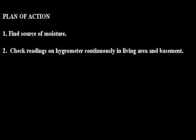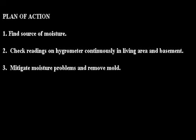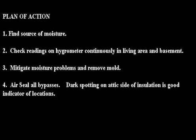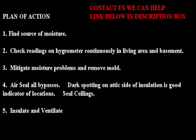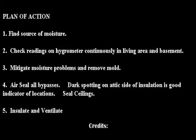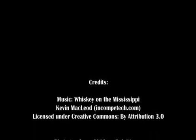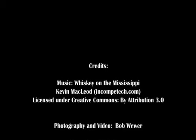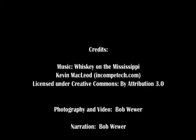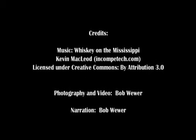Your plan of action: find the source of your moisture — whether it's in the basement or the living area. Check readings on a hygrometer continuously in the living area and the basement. Mitigate the moisture problems, remove the mold, then air seal, air seal, air seal — seal that ceiling with a vapor retardant paint. Then you can go on to adding insulation and doing the ventilation. I hope all this has been helpful — continue to watch our videos, have a great day.